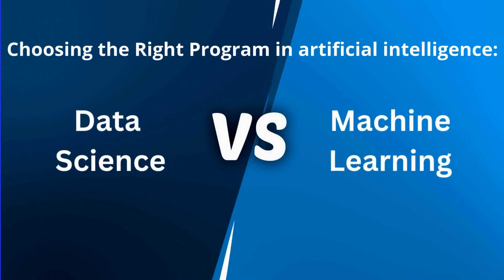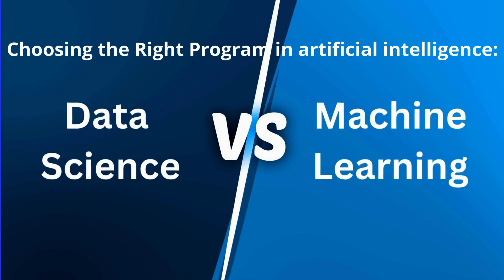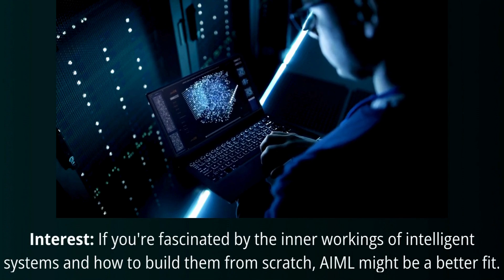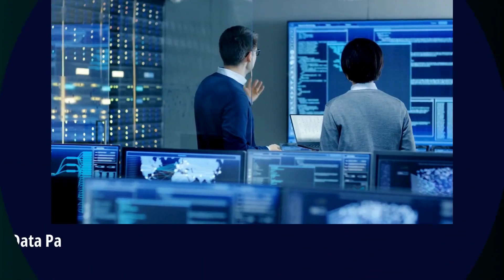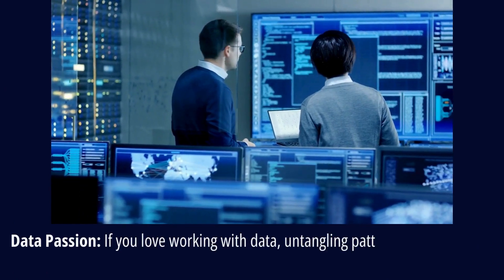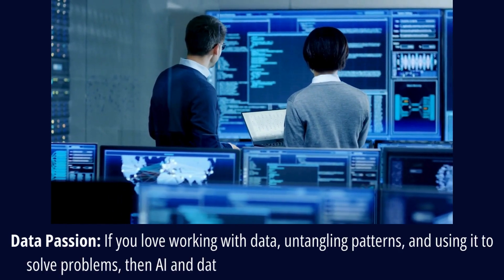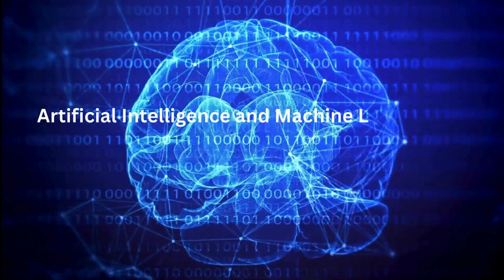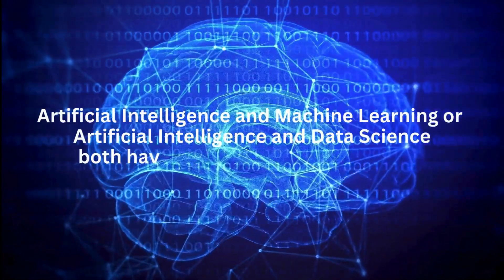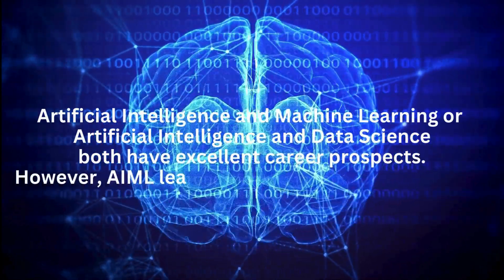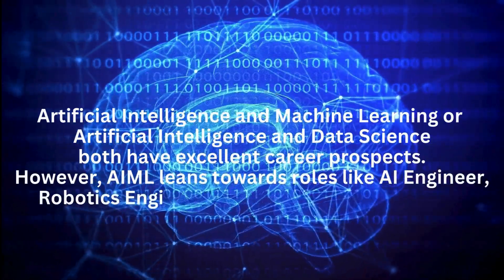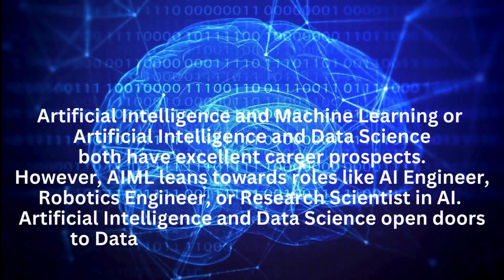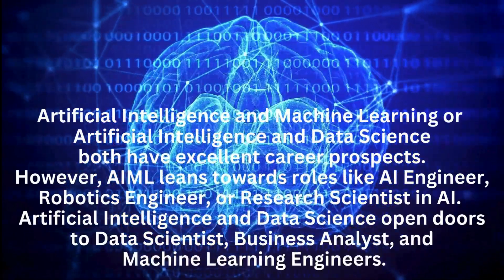Choosing the right program: Data Science vs Machine Learning. If you're fascinated by the inner workings of intelligent systems and how to build them from scratch, AIML might be a better fit. If you love working with data, untangling patterns, and using it to solve problems, then AI and Data Science engineering might be your calling. AIML leans towards roles like AI engineer, robotics engineer, or research scientist. AI and Data Science opens doors to data scientist, business analyst, and machine learning engineer roles.